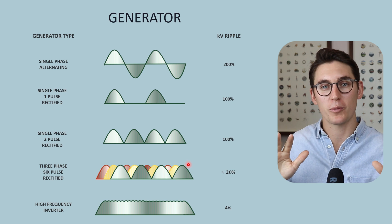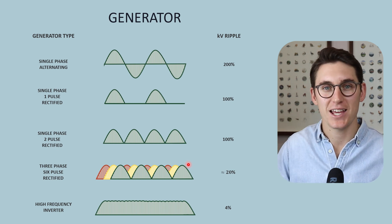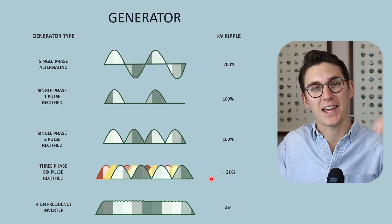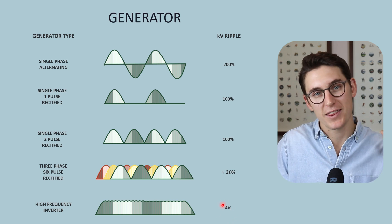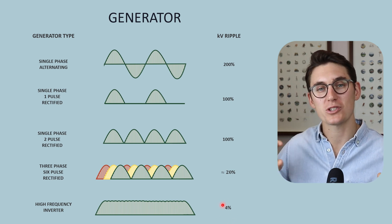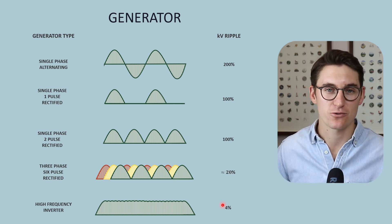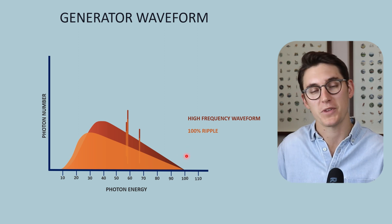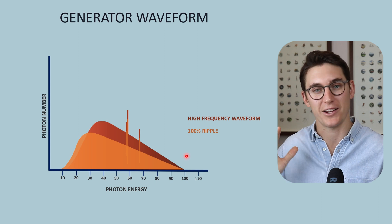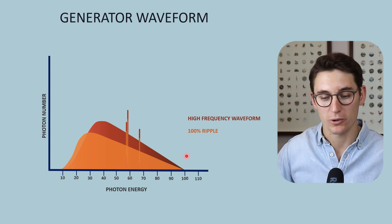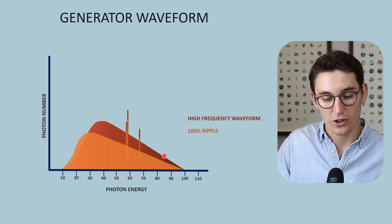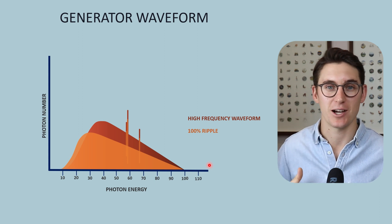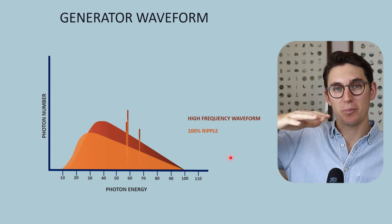When we overlap those ripples more or use a high frequency inverter, we reduce that KV ripple — reducing the difference between our KVP and our lowest kilovolt. A high frequency waveform provides a more direct flow of electrons from cathode to anode at a set energy level with very little ripple between maximum and minimum KV. This gives us a lot of photons being produced — a high x-ray beam quantity. When we use a higher frequency waveform, our KVP remains higher for longer.